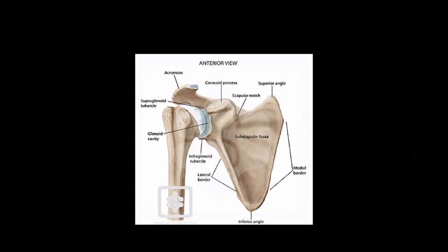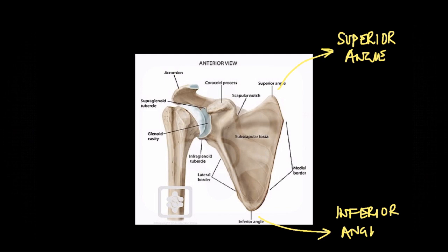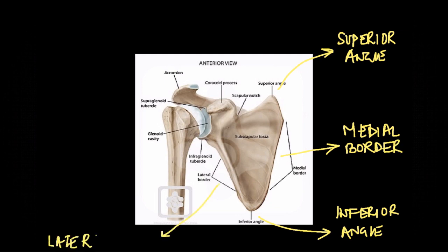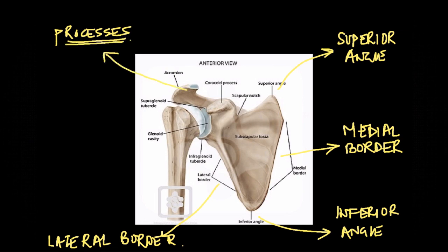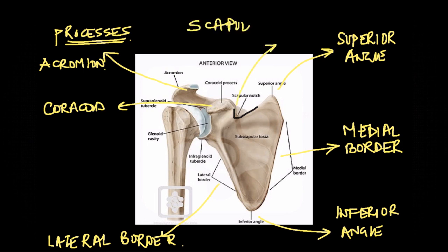Let's have a look at the scapular anatomy. The scapula has two angles: the superior angle and the inferior angle. It also has two borders: the medial border and the lateral border. It's important to note that the scapula has two processes — the acromion process and the coracoid process. The acromion process is important for the suprascapular block, whereas palpation of the coracoid process is important when doing the infraclavicular block.